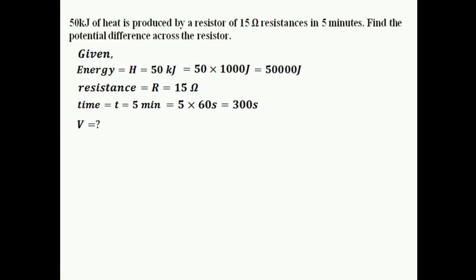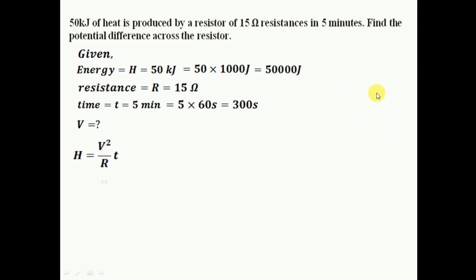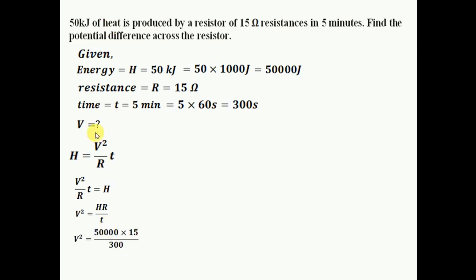I have to find the potential difference V. Since current is not given in the question, I will not use the formulas involving current. I'll use the form H equals V squared by R times T. Rearranging, V squared is equal to H times R divided by T. Substituting: H is 50,000, R is 15 ohms, and T is 300 seconds. Cancelling zeros gives 3 times 5 equals 15, and multiplying we get V squared equals 2500.